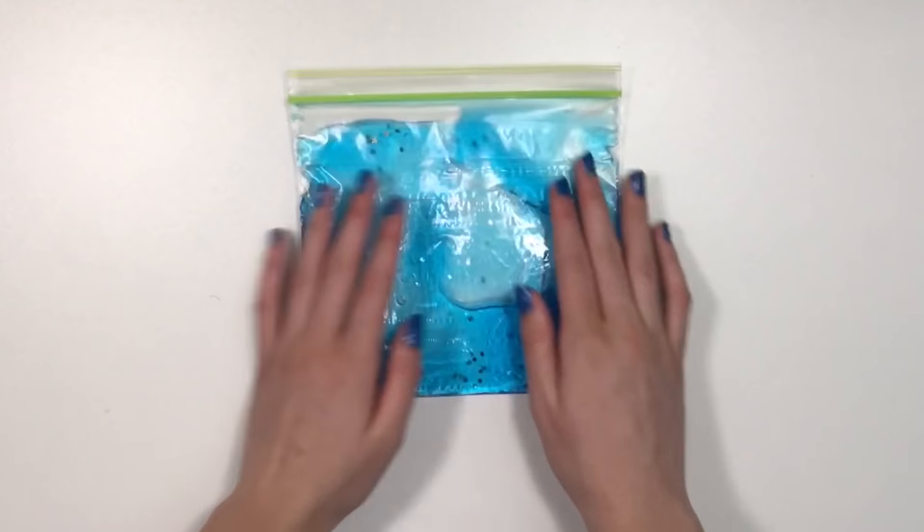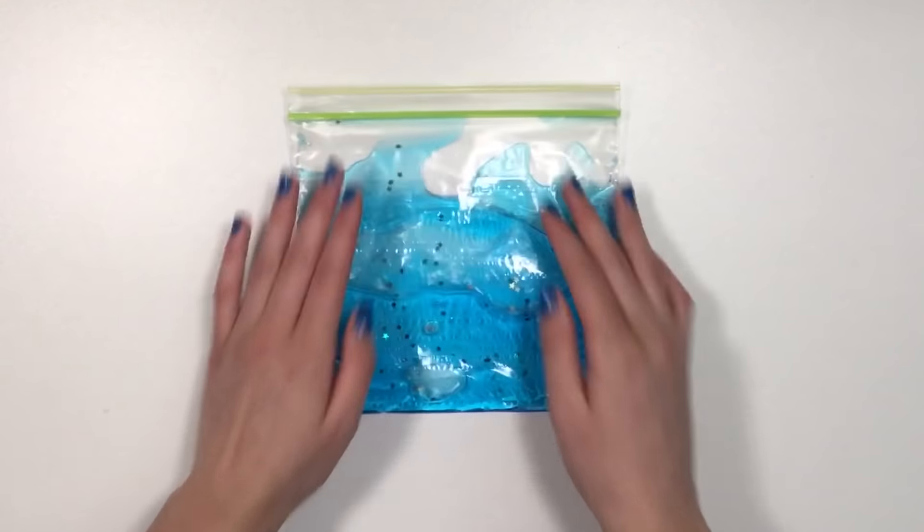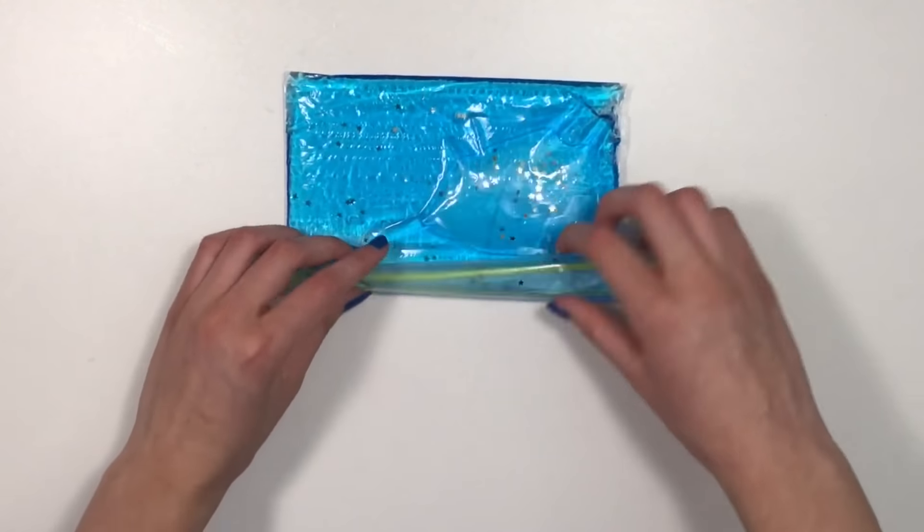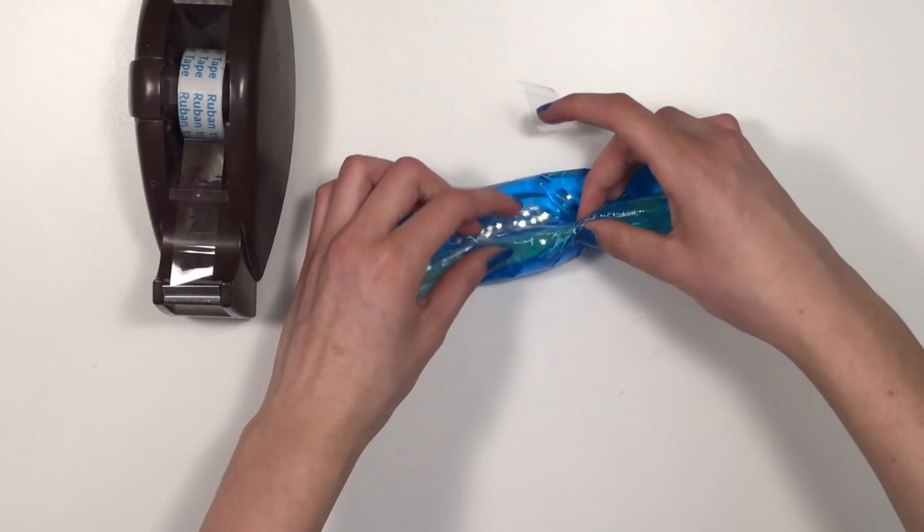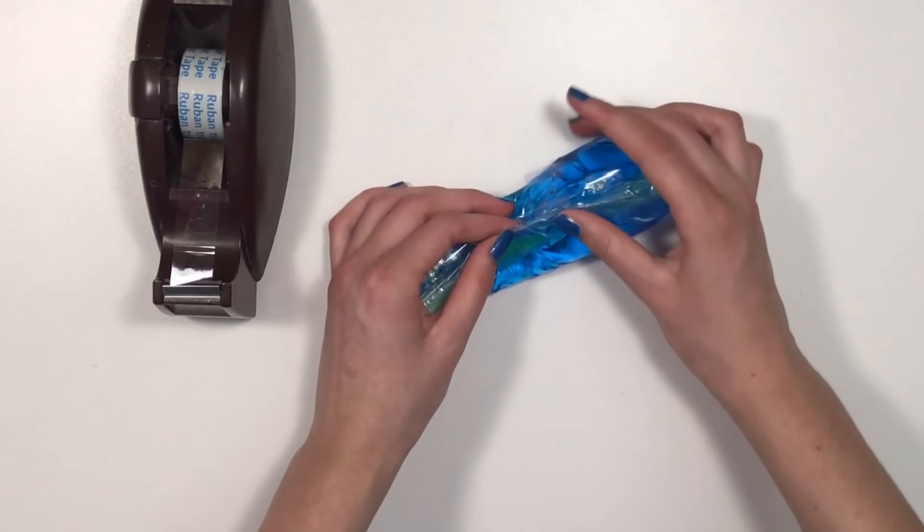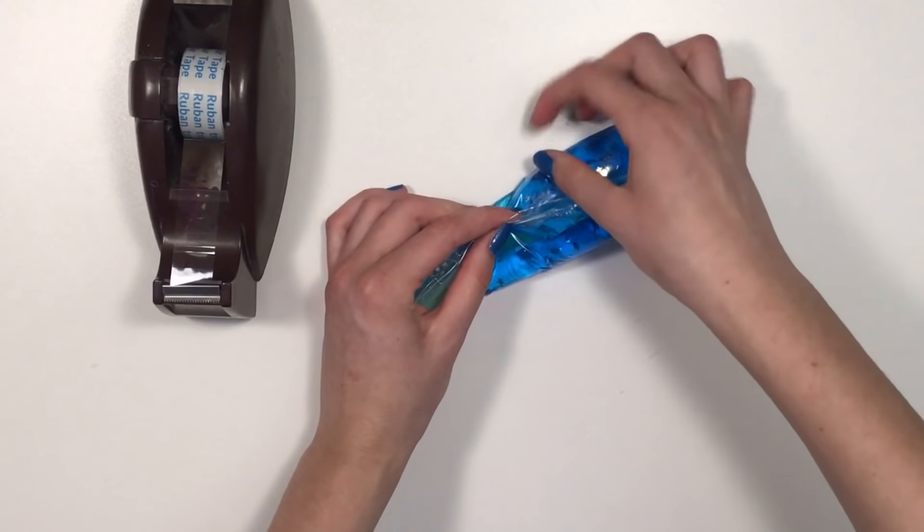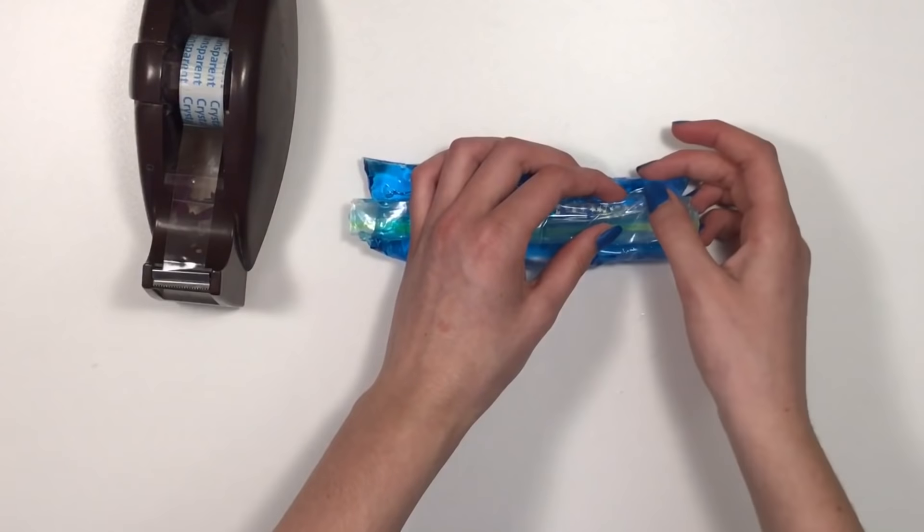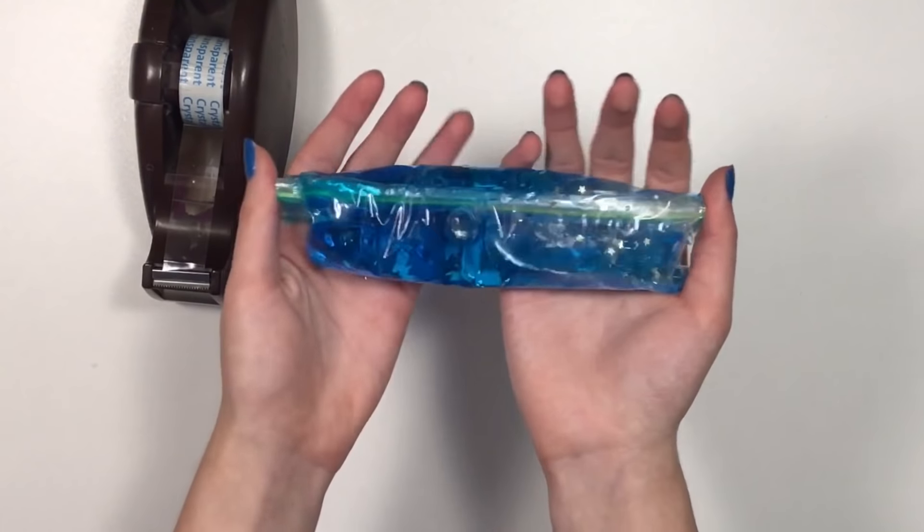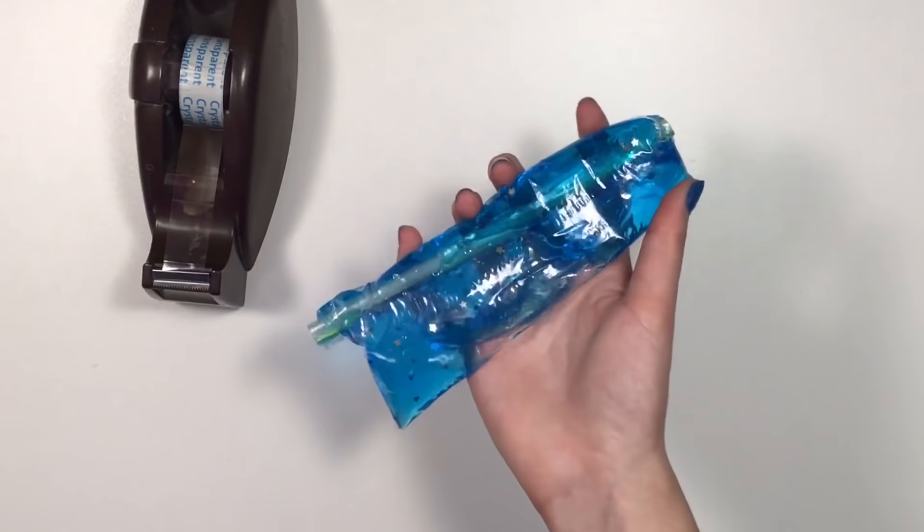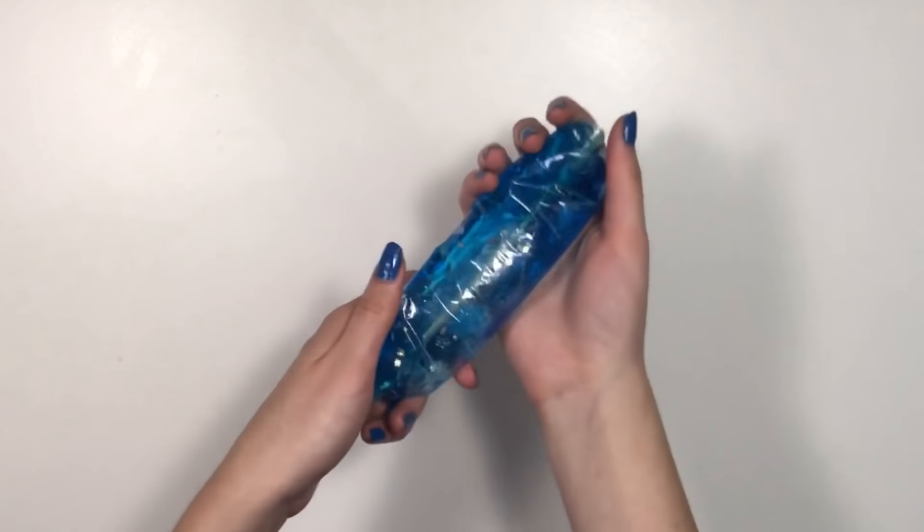Once you got all the air out, close your bag super duper tightly. Place the bag sideways like this, now go ahead and start rolling in this side up. Now grab some plastic tape, preferably clear tape, and then just tape it. And now your fidget snake is all complete.